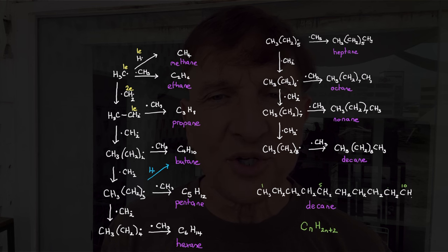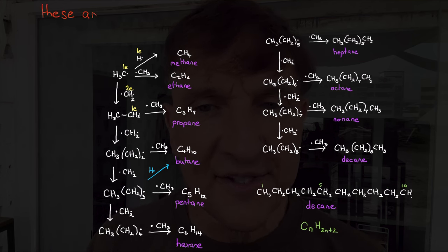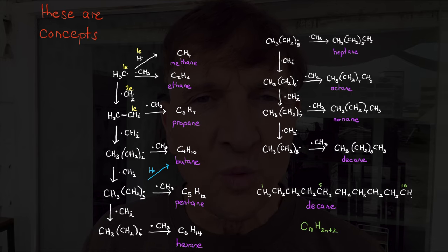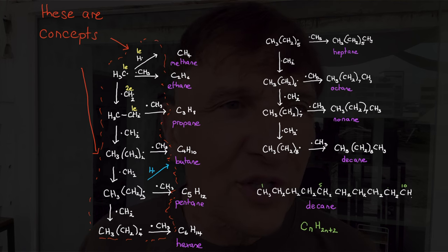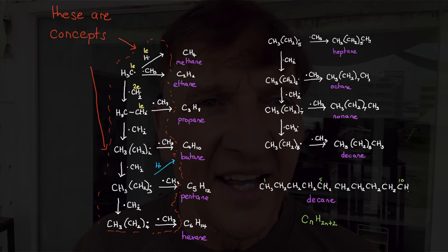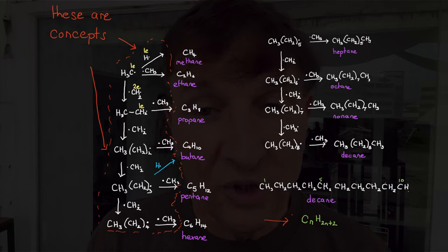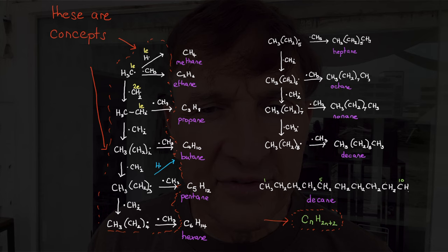But let's say you have remembered those facts. Then if I tell you that CH3–CH2• is an ethyl radical, you can extrapolate the concept and tell me what a propyl, butyl, pentyl, hexyl, heptyl, octyl, nonyl, or decyl radical will look like. The facts started us off, and the concept took us much further.